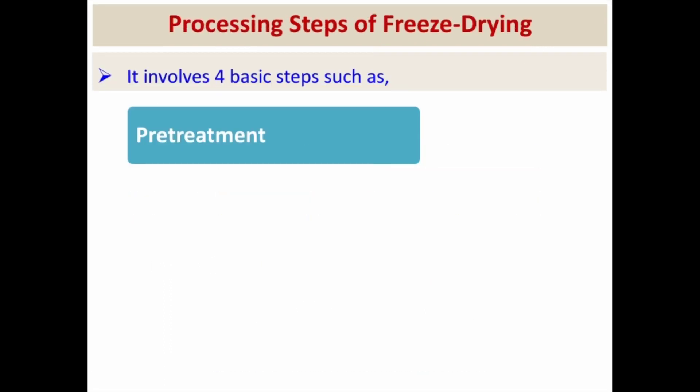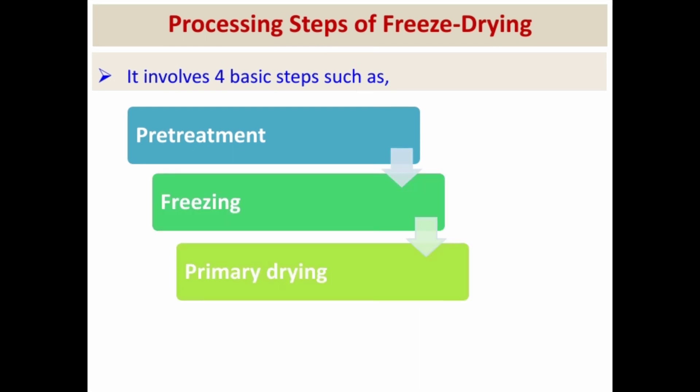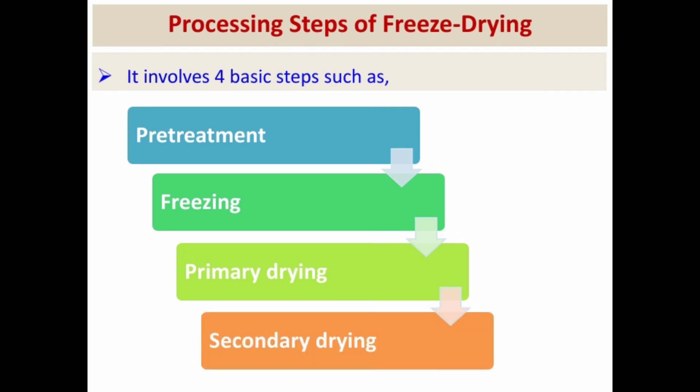The freeze drying process involves four basic steps: pre-treatment, freezing, primary drying, and secondary drying.